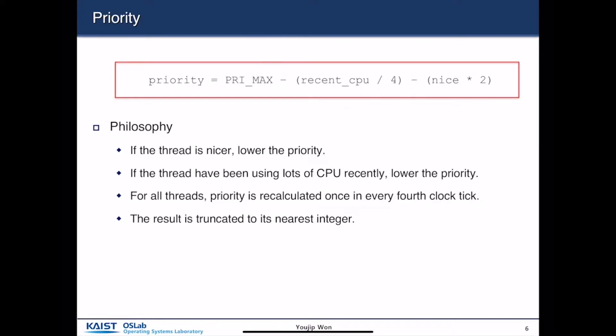The priority of a process is computed as: priority_max minus recent_cpu divided by 4, minus nice times 2. This equation is very simple, but it is profound.